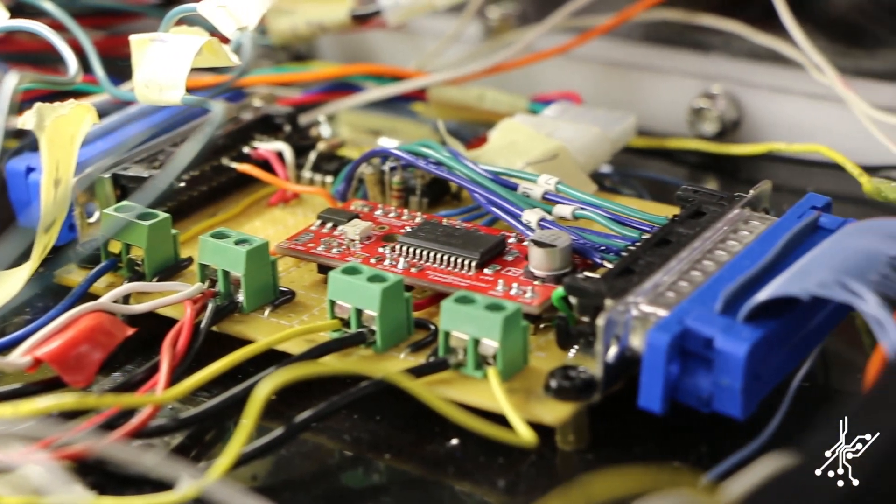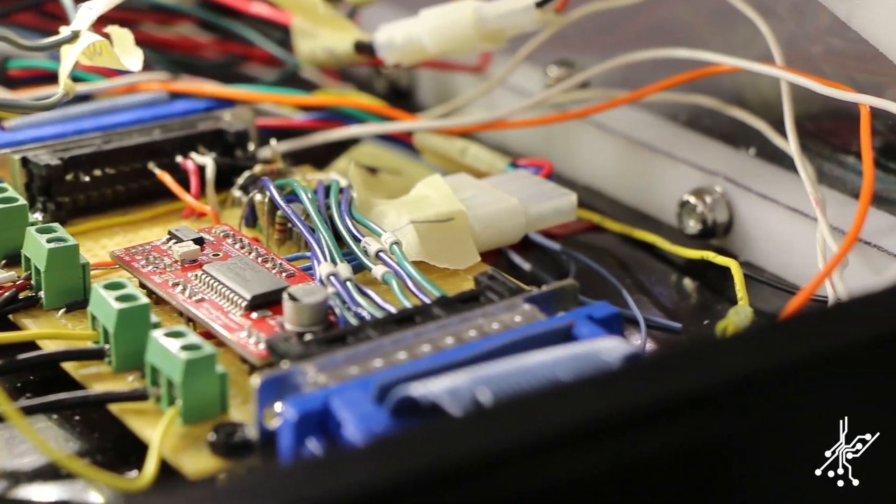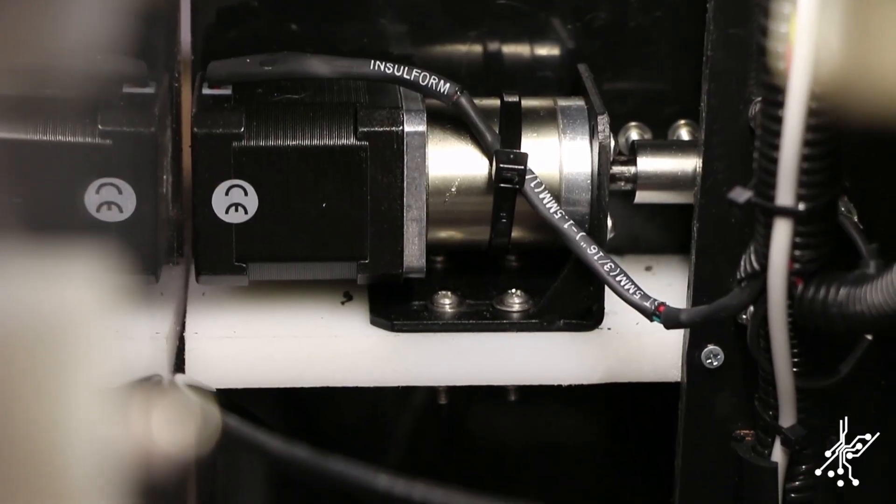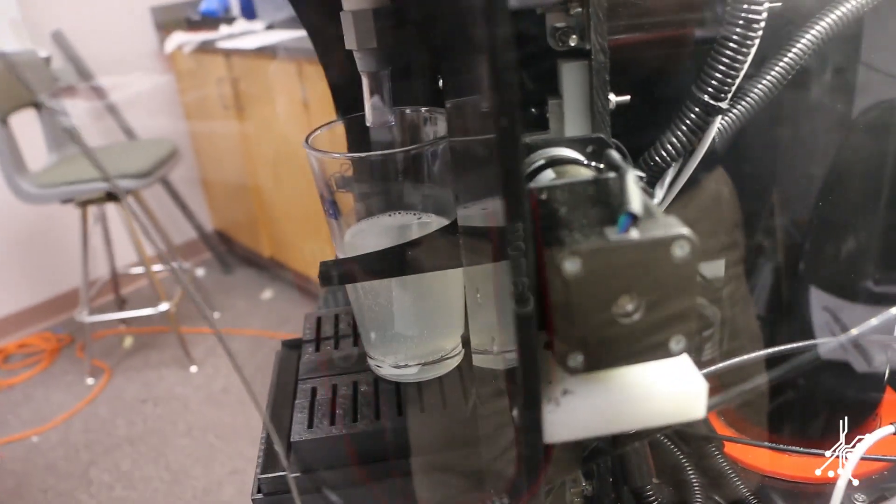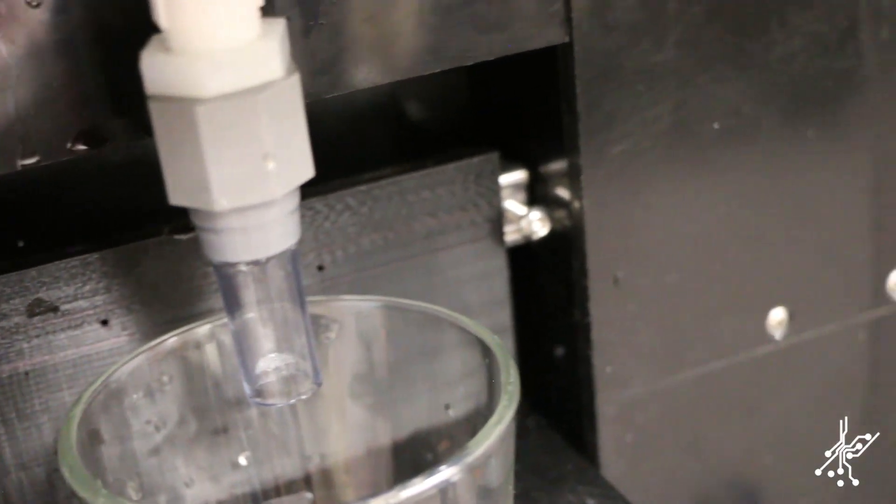The SmartPour implements an easy-driver motor driver. This allows us to microstep the stepper motor and allow for a smoother rotation. This motor is housed in the lower compartment of our system and attached to a D-Rod that runs the full width of the cradle system.